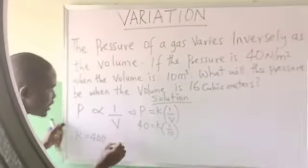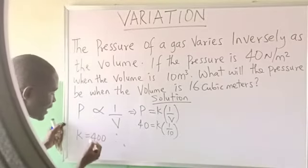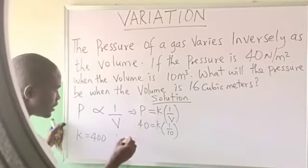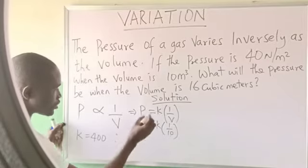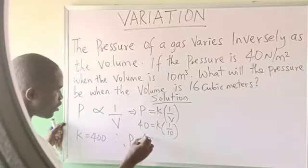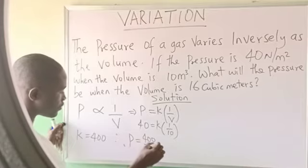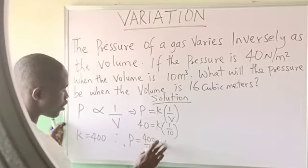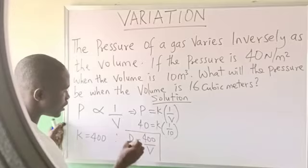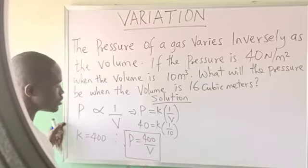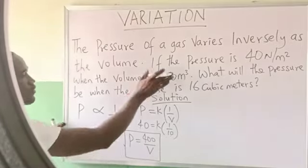Once you get it, say that what you will now do is carry it and put it here. That means P is equal to k, and that is 400 over V. This is what we call the law or the relationship connecting what? P and V from this question.